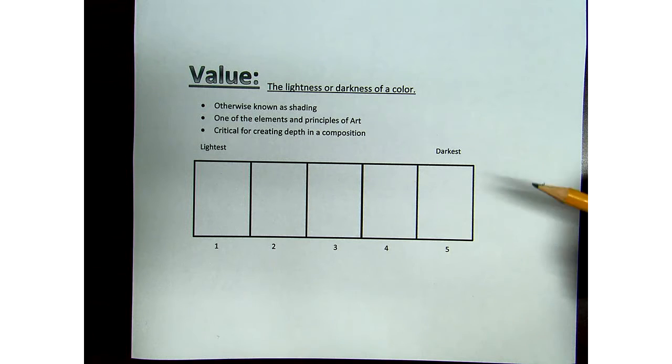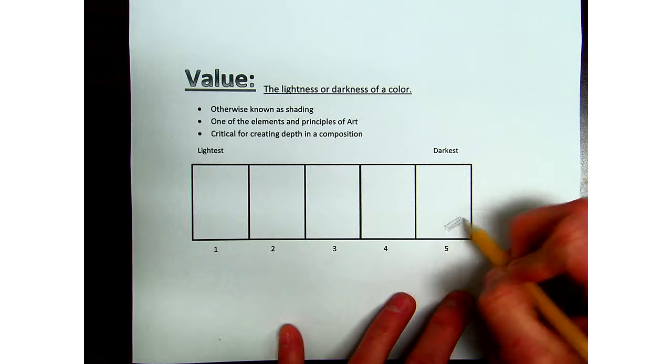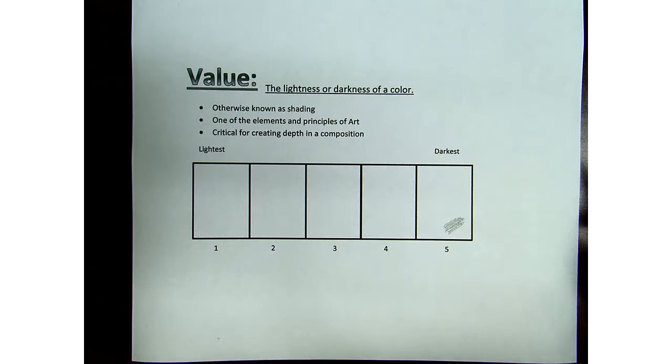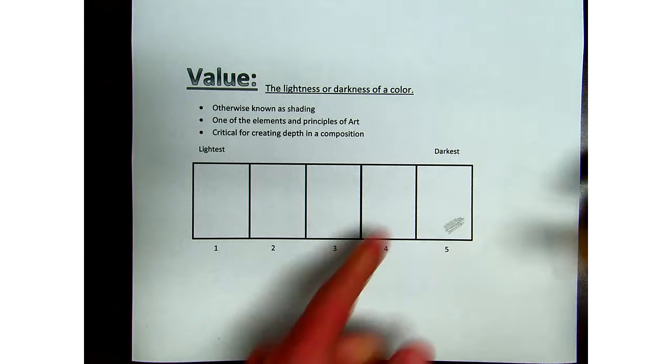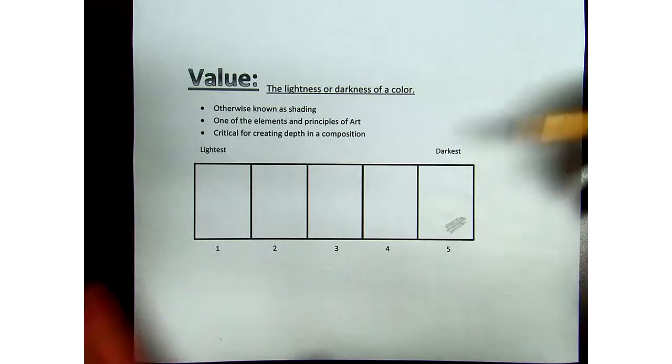A couple of things though, whenever you're shading this in, you don't want to use the tip of your pencil like this and go back and forth. Because it's going to take a long time, and you're still going to have white areas on the side, which are going to affect how you see the value, how it plays with the other values beside it.